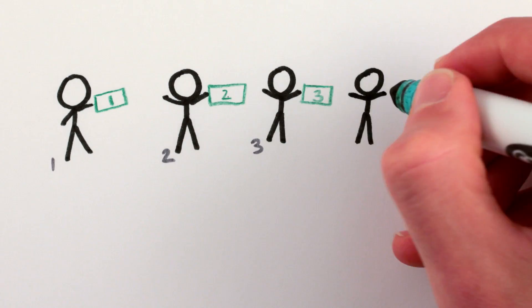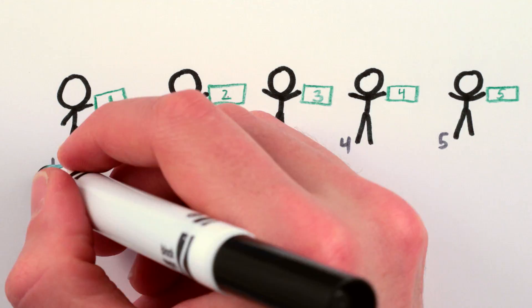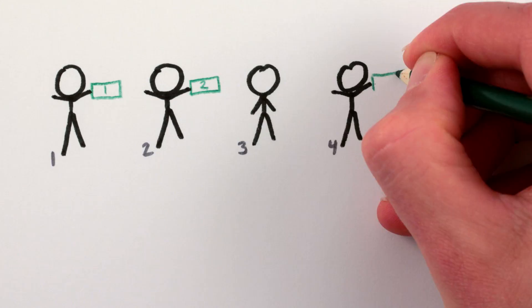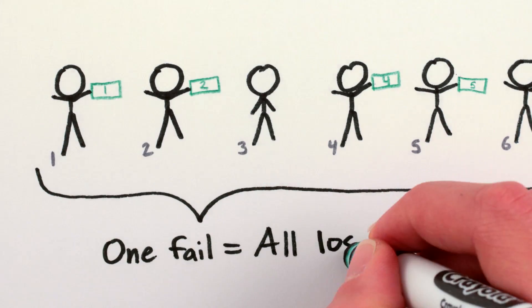At the end, if all 100 of you have successfully found your own bills, you all win and I'll give you each $100 plus the one you started with. But if any one of you doesn't find your bill, I keep all the dollars.